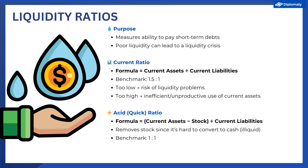The second ratio is the acid or quick test ratio, which is very similar to the current ratio except it removes stock from the equation. Stock can be very difficult to turn into cash and might therefore distort liquidity calculations. The formula is current assets minus stock divided by current liabilities. For example, think of a bakery — we might see a strong current ratio, but if 60% of their current assets are tied up in cakes, muffins, and croissants not yet sold, that stock could spoil and have to be thrown away. The acid test ratio helps us understand whether the business has enough cash and debtors to cover its current liabilities.